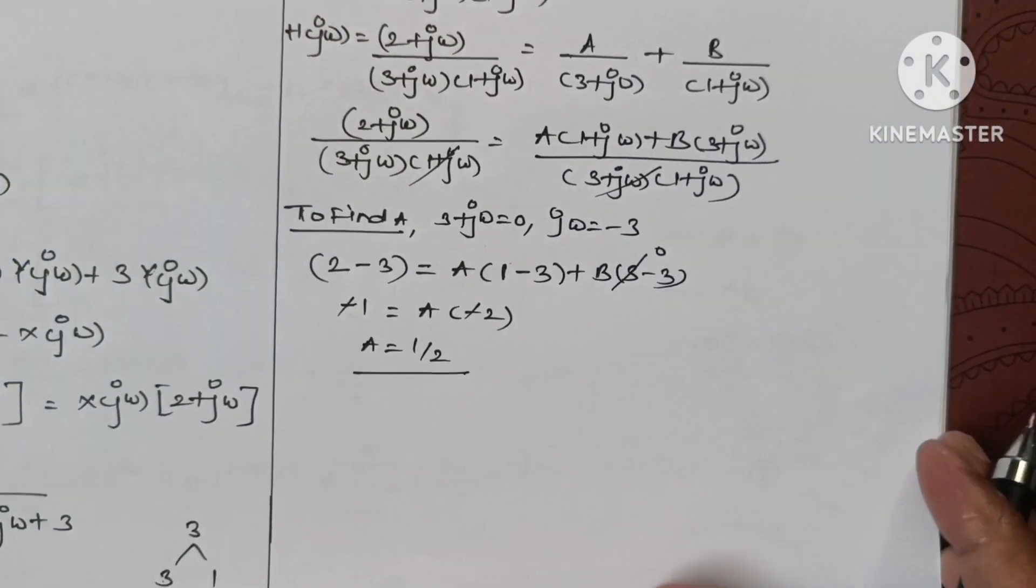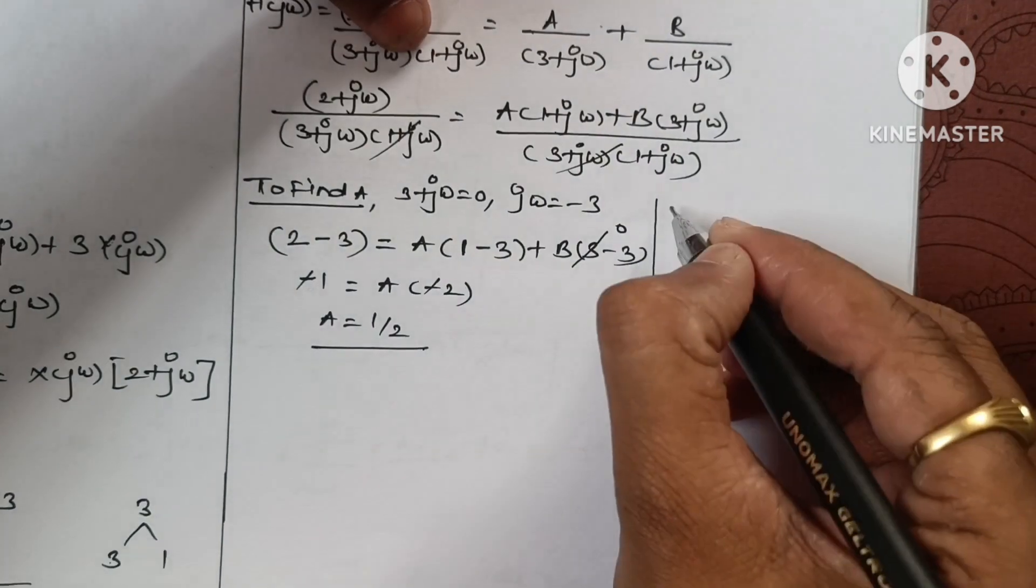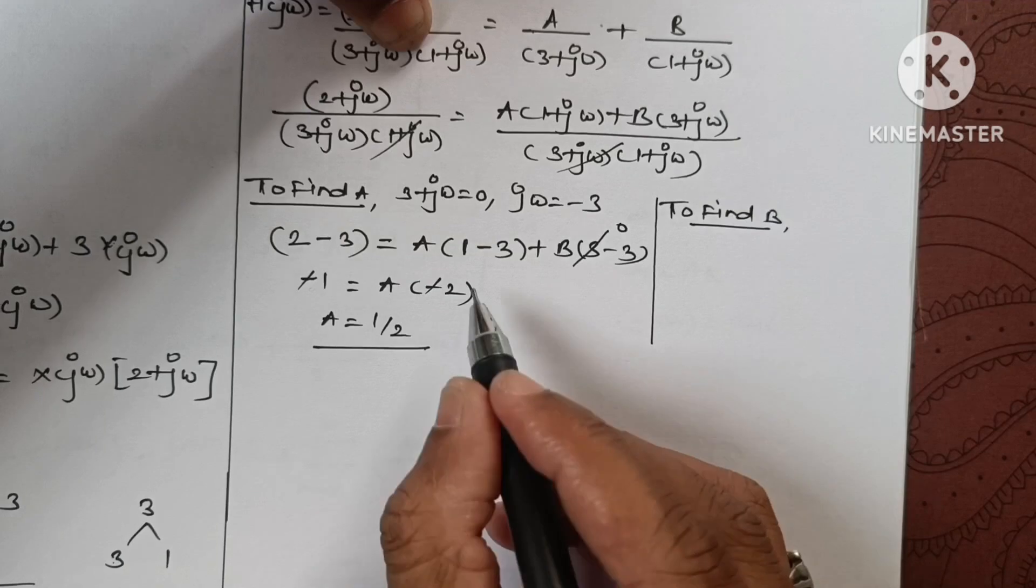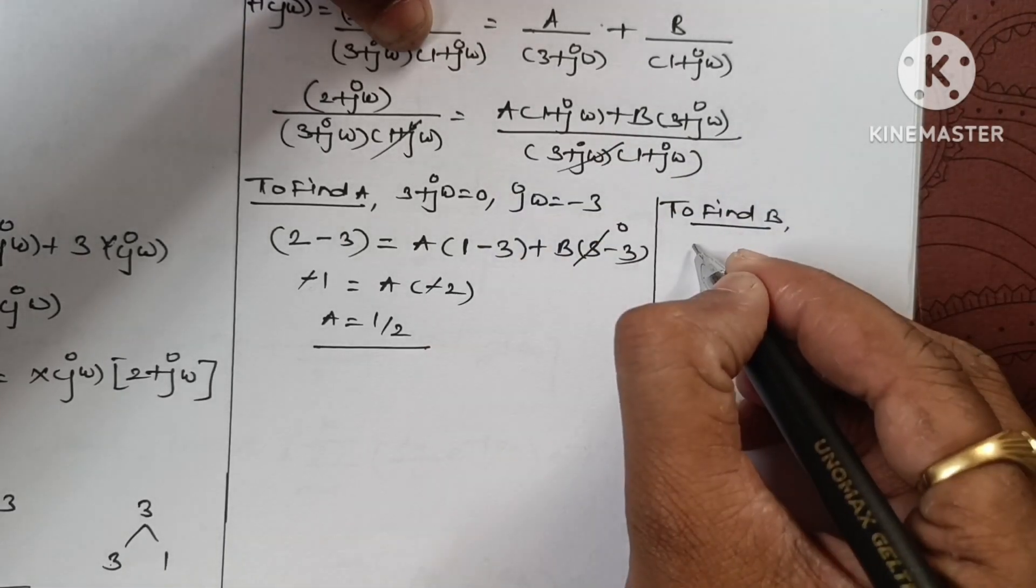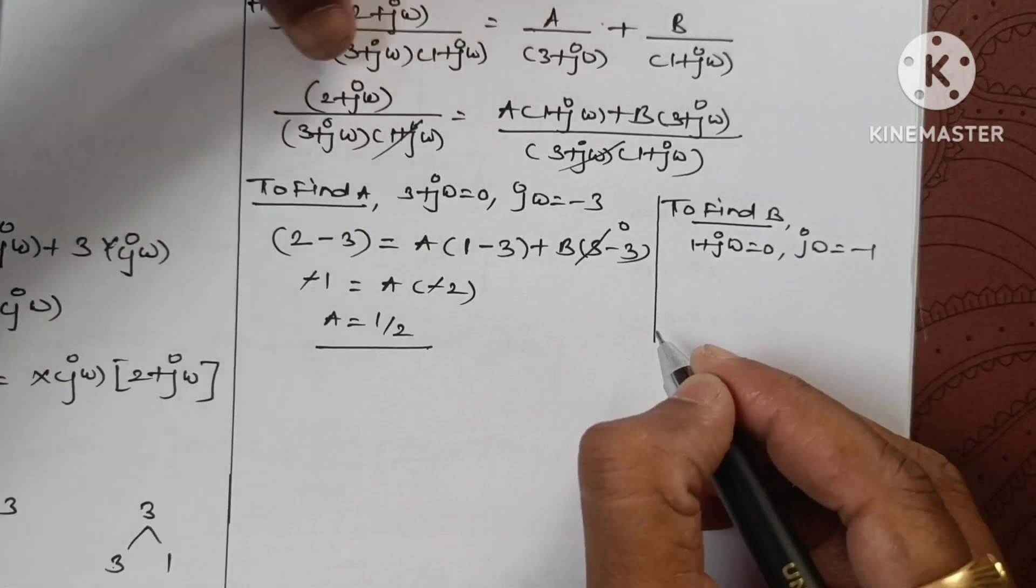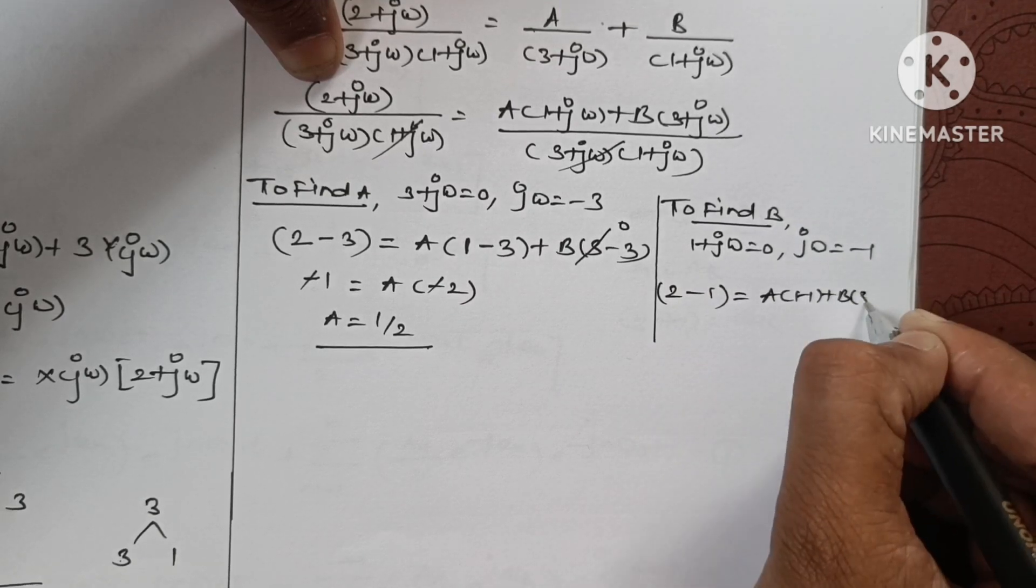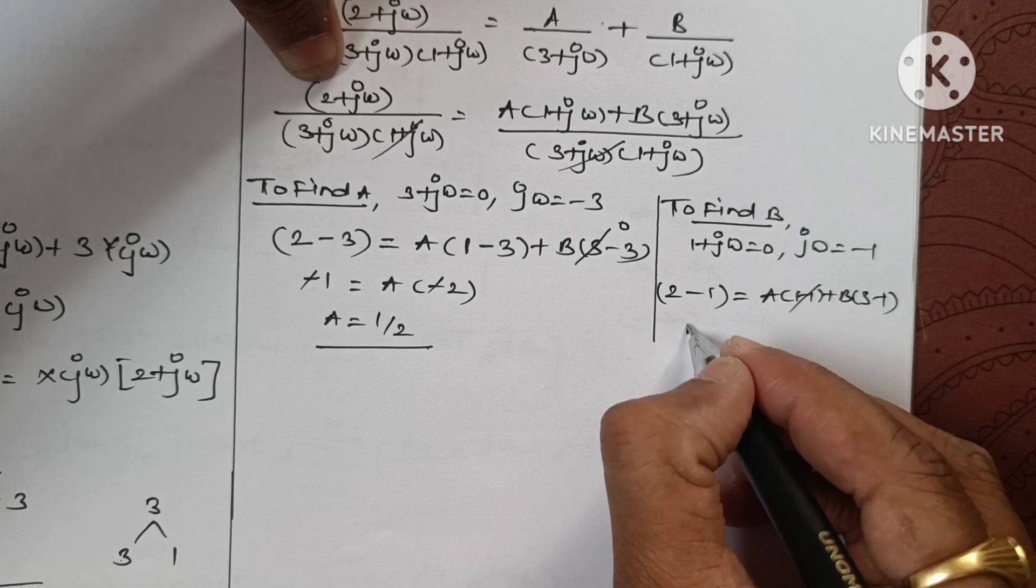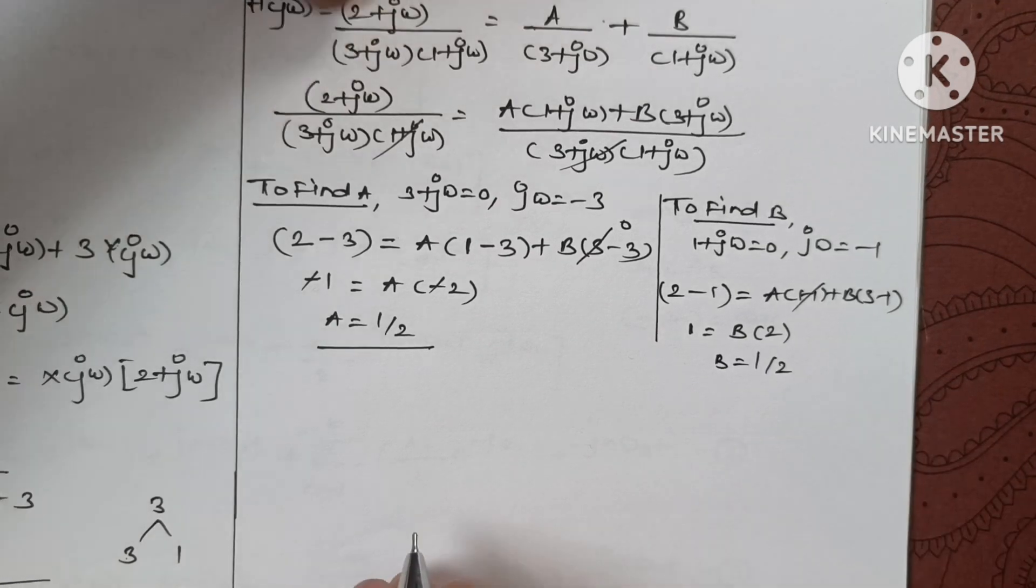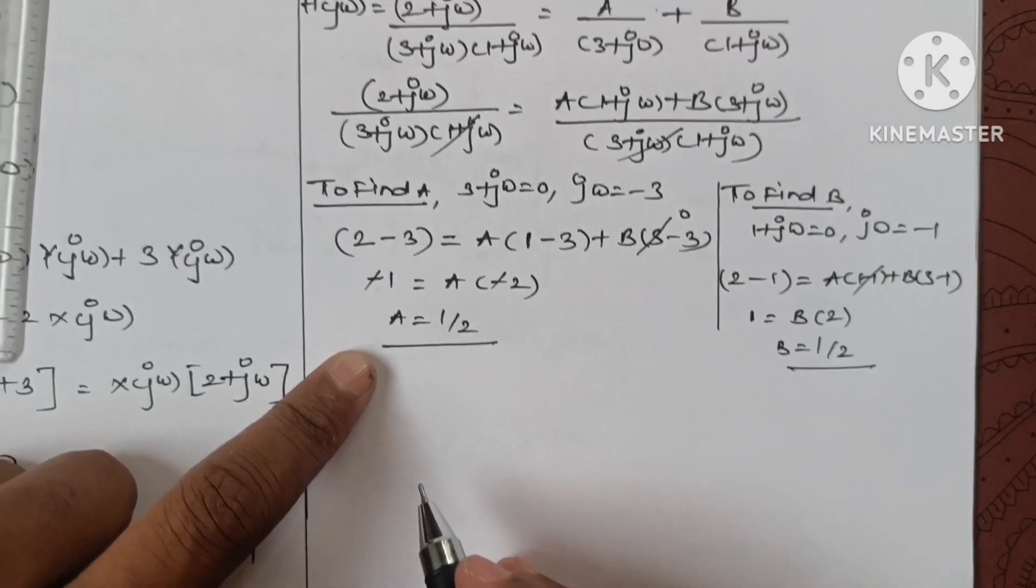Similarly, to find b, we set 1 + jω = 0, so jω = -1. Substituting: 2 - 1 = a(0) + b(3 - 1). This gives 1 = 2b, so b = 1/2. We got both a and b as 1/2.